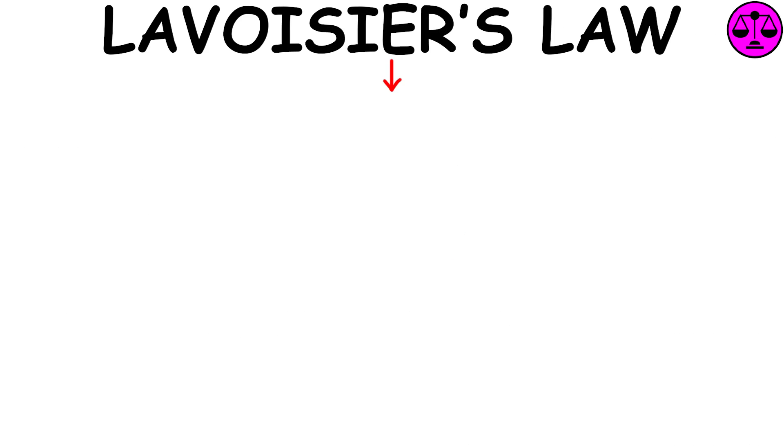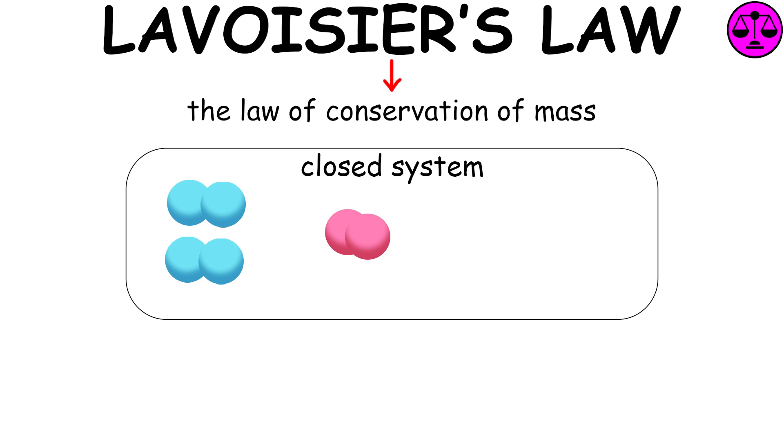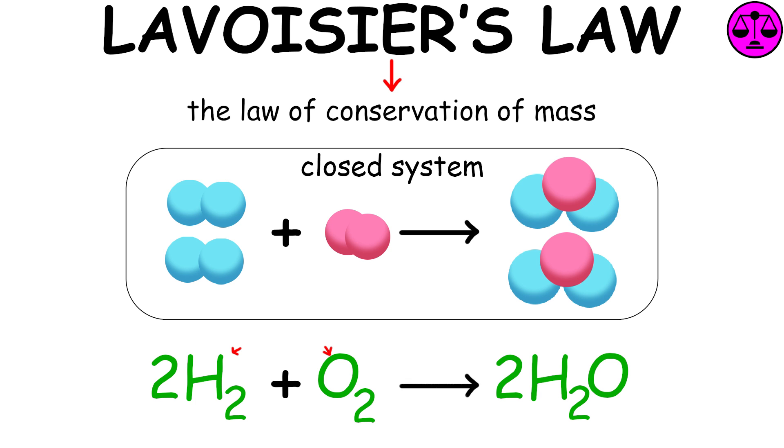Lavoisier's Law, also known as the Law of Conservation of Mass, asserts that in a closed system during a chemical reaction, the total mass of the substances involved remains constant. This means that the combined mass of the reactants equals the combined mass of the products.